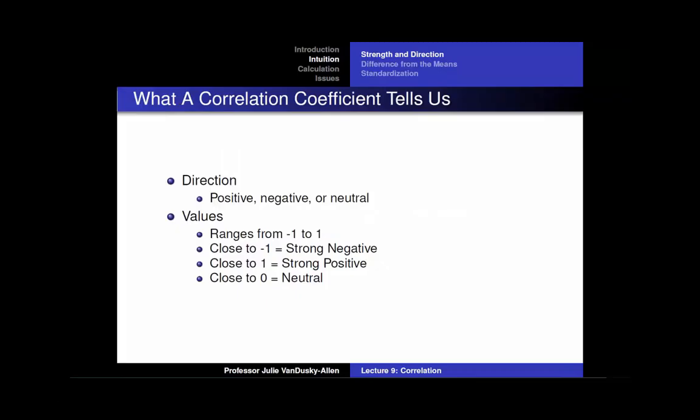One way to measure the specific strength of the relationship between two variables is a correlation coefficient. A correlation coefficient tells us the direction of the relationship between two variables — it tells us if, as one variable increases, the other variable increases, decreases, or stays the same. A correlation coefficient ranges from negative 1 to 1. Correlation coefficients close to negative 1 indicate a strong negative relationship between two variables. In other words, as one variable increases, the other variable tends to almost always decrease.